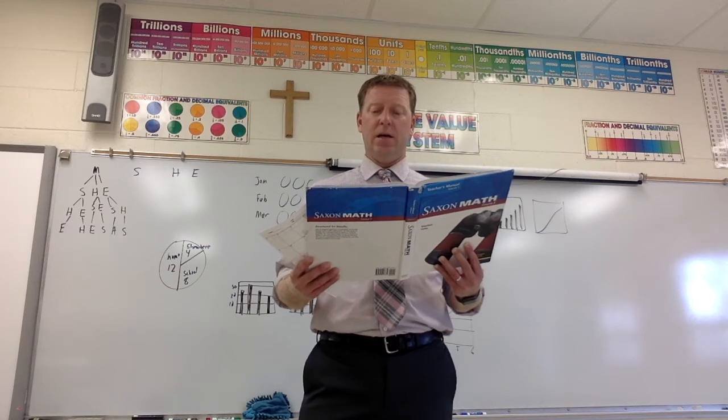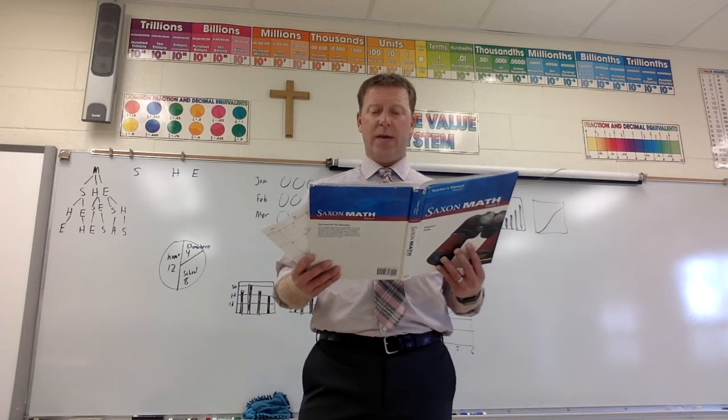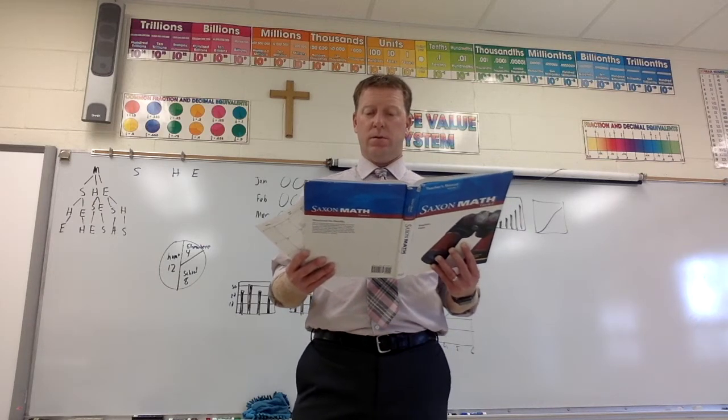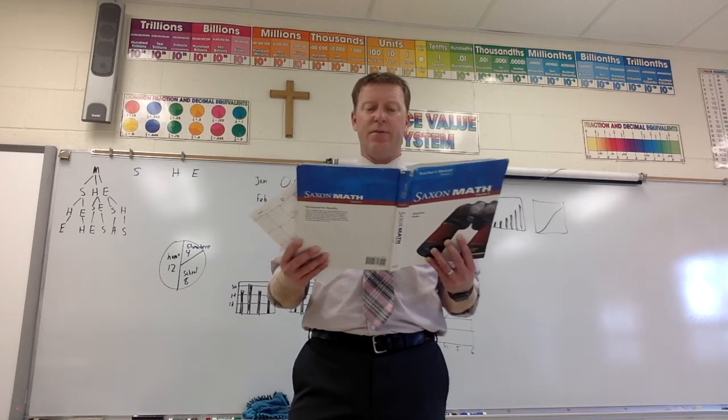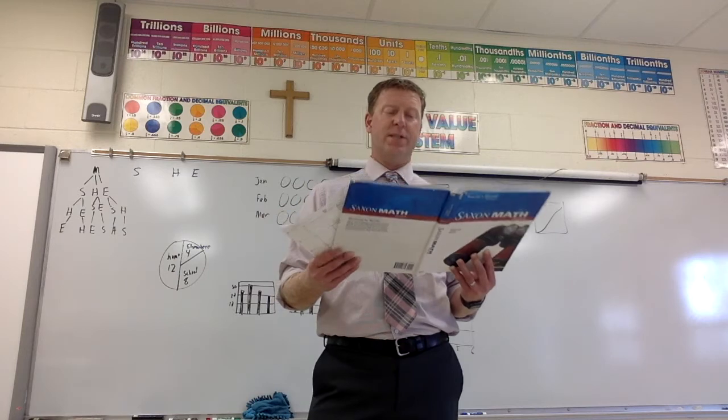8 times 4 is 32, minus 2 is 30. Divide by 3 is 10. Times 4 is 40. Divide by 5 is 8, plus 1, 9, square root 3. Times 6, 18. Plus 2, 20. Times 2, 40. Plus 2, 42. Divide by 6, 7. Times 5, 35. Plus 1, 36, square root is 6.